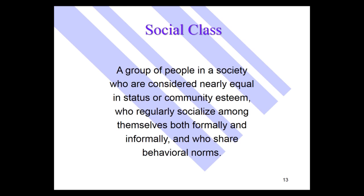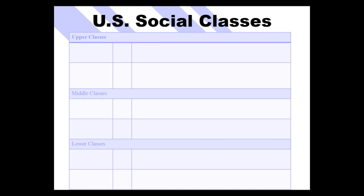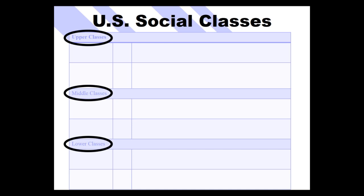Social class is a group of people in a society who are considered nearly equal in status or community esteem, who regularly socialize among themselves both formally and informally, and who share behavioral norms. We can put people in a few different social class buckets divided into upper class, middle class, and lower class, with subclasses within each.